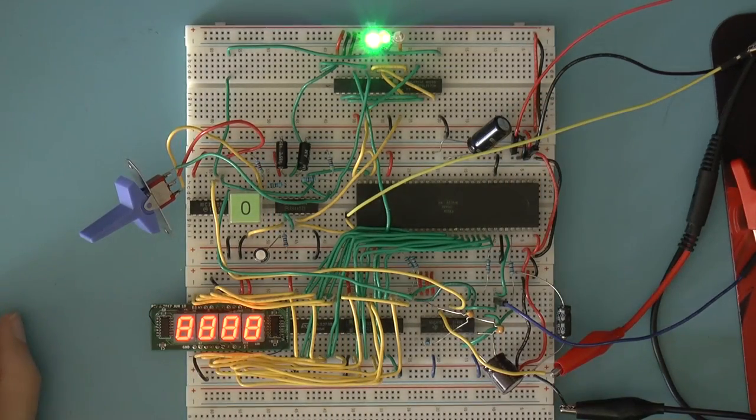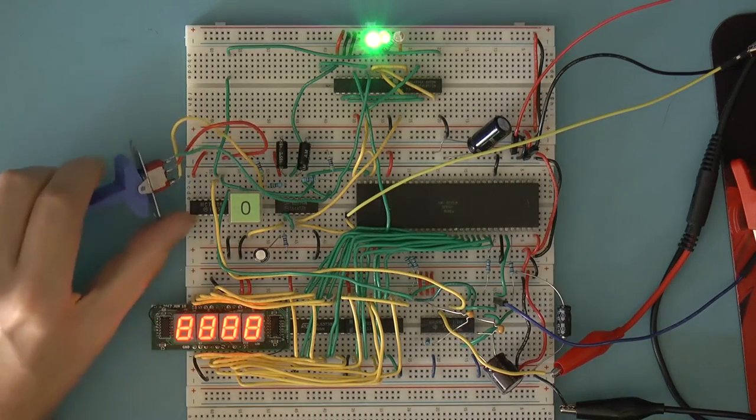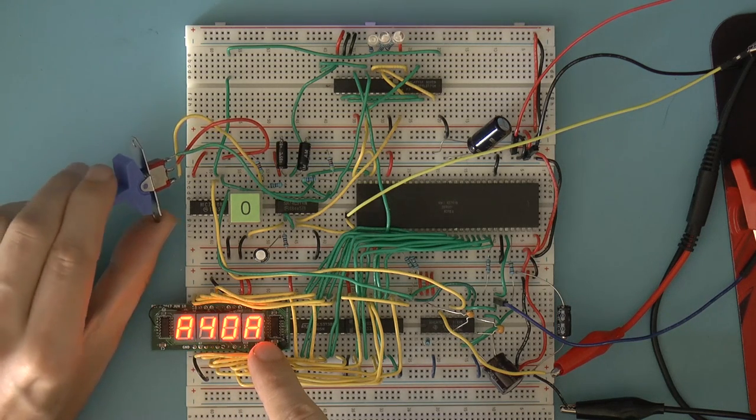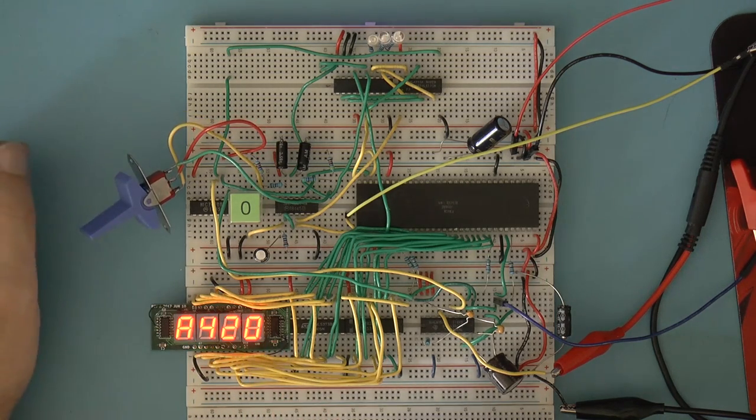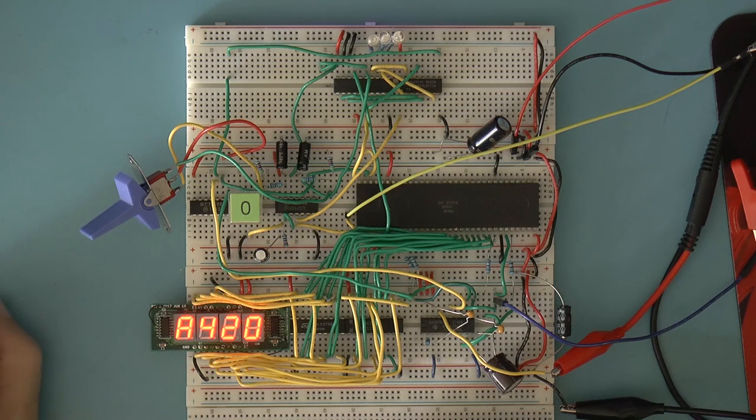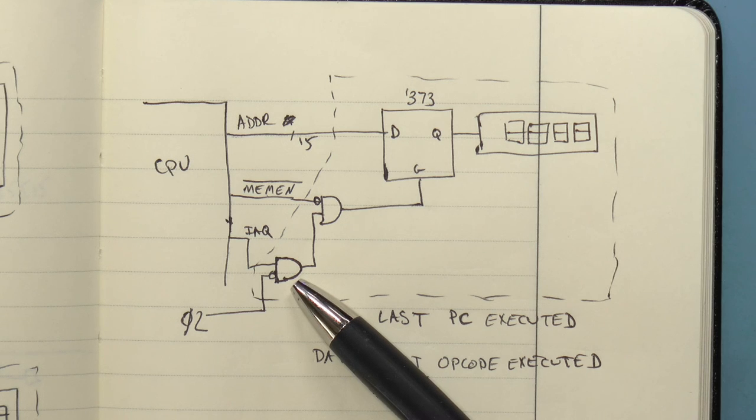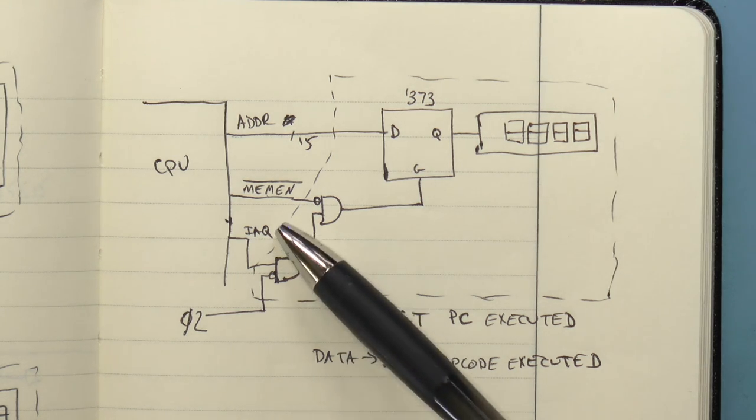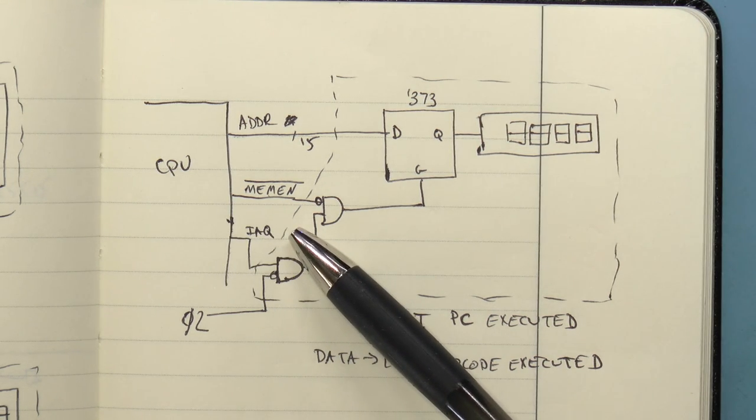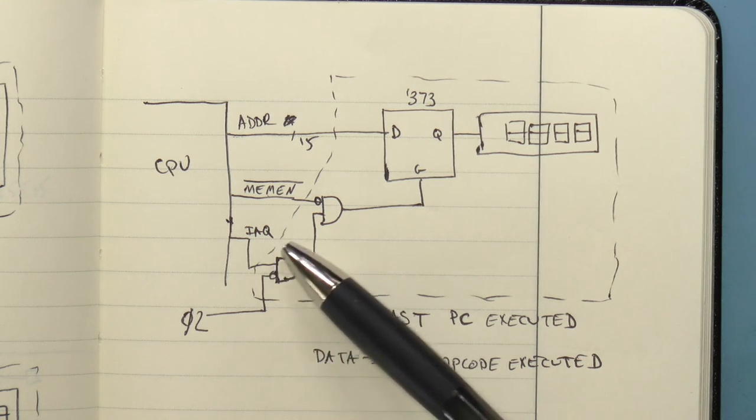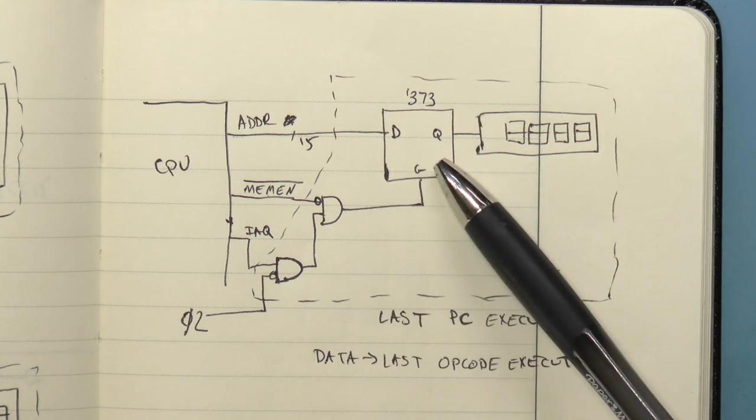So right now, what is being latched is the last address in memory that the CPU accessed. If I latch the data lines in the same way, it would be the last data that the CPU read or wrote. With just a little modification, I can change this to latching the address of the last instruction retrieved by the CPU, by including the IAQ, or instruction acquire signal.